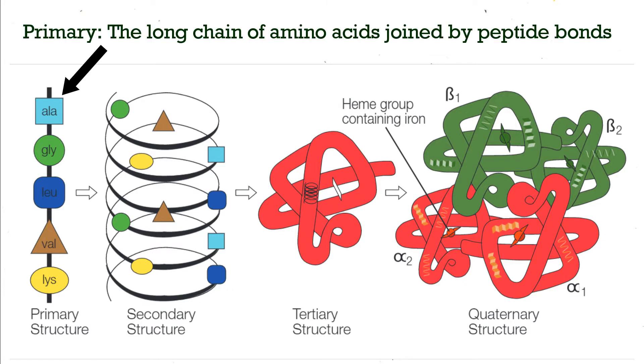The primary structure of a protein is the end product of translation as discussed in our last video — simply the long chain of amino acids joined by peptide bonds, called a polypeptide chain.